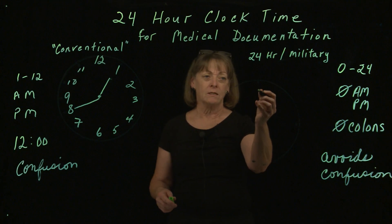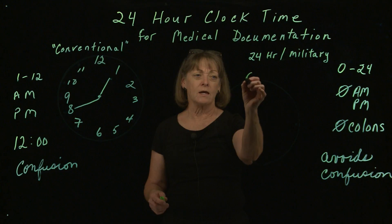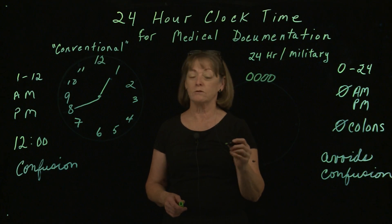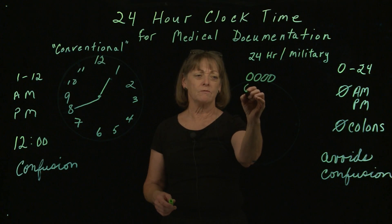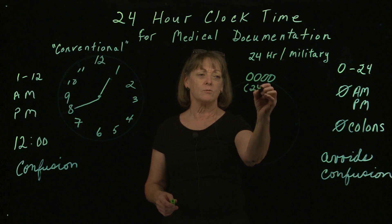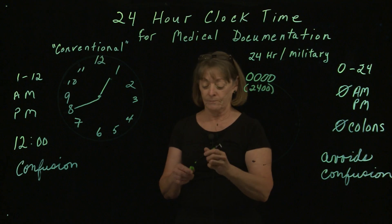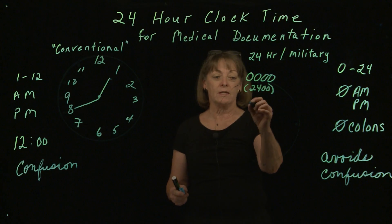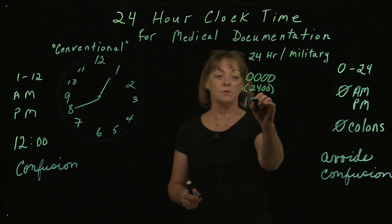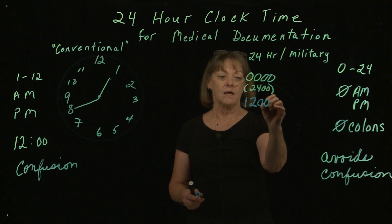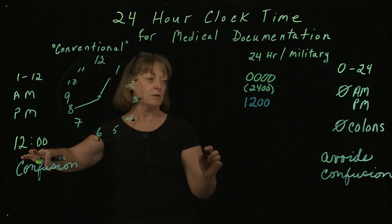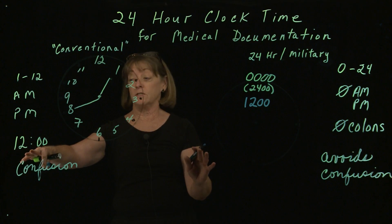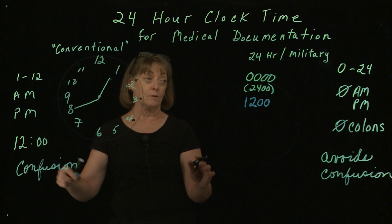Basically your day starts at zero hours — 0000. Some people think of this still as 2400, which is midnight. When you get around to 12 again, that is noon — the traditional 12 noon. But in conventional time, we don't know what it is because nobody put AM or PM.